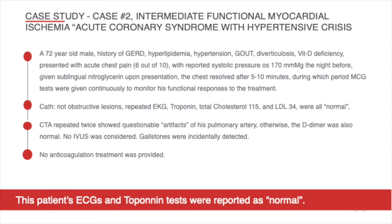Immediately after receiving sublingual nitroglycerin, his first MCG test session was performed. It was noted that his first test showed a value of 6 with moderately severe myocardial ischemia, and subsequent testing reduced down to 4 with his chest pain resolved after about 5 to 10 minutes. This patient was diagnosed with unstable angina, and a consultant cardiologist admitted him for a diagnostic angiogram due to his high risk of being positive for critical stenosis. The patient had no further chest pain throughout the hospital stay for the next 23 hours.